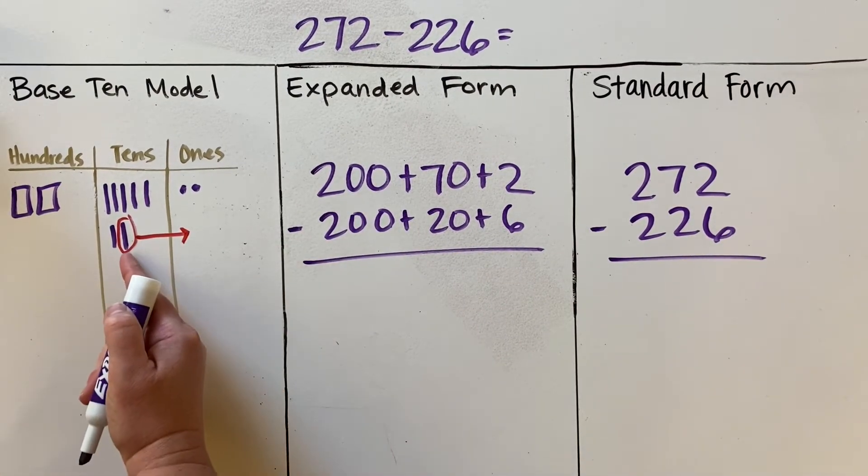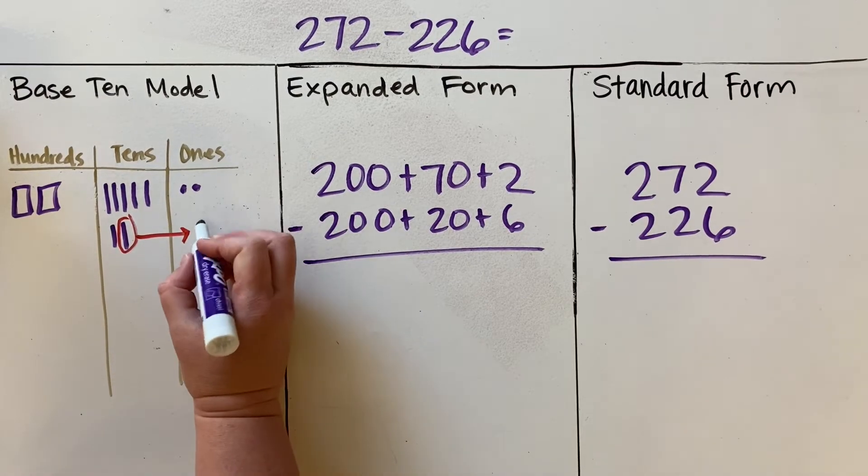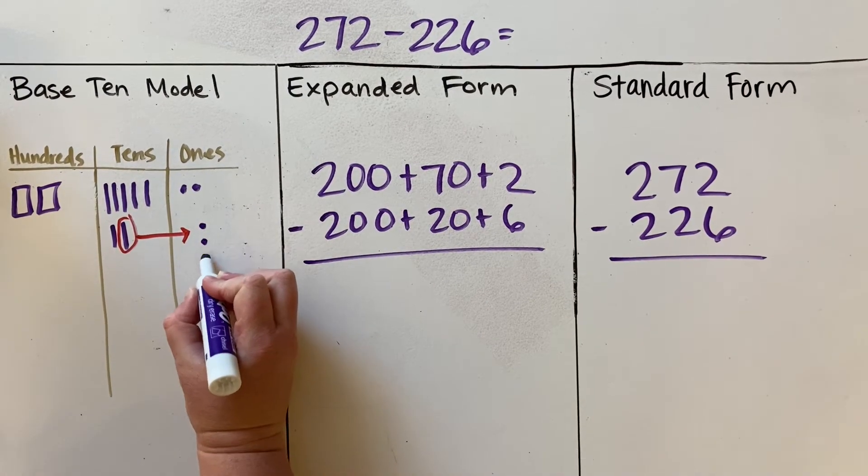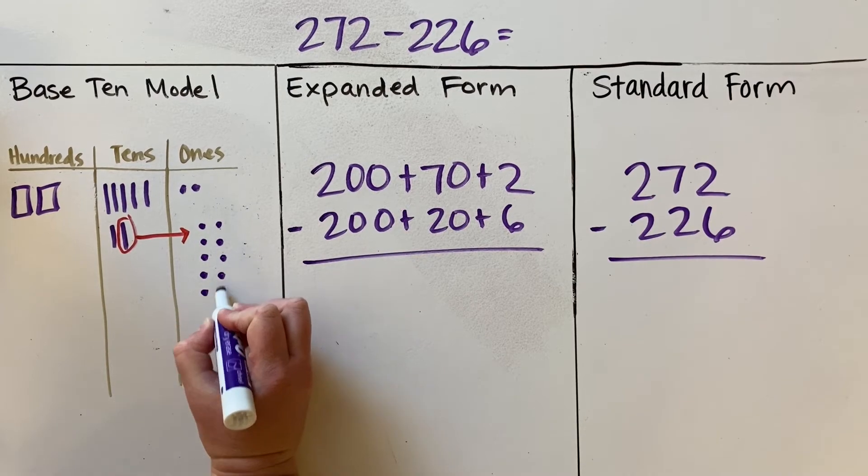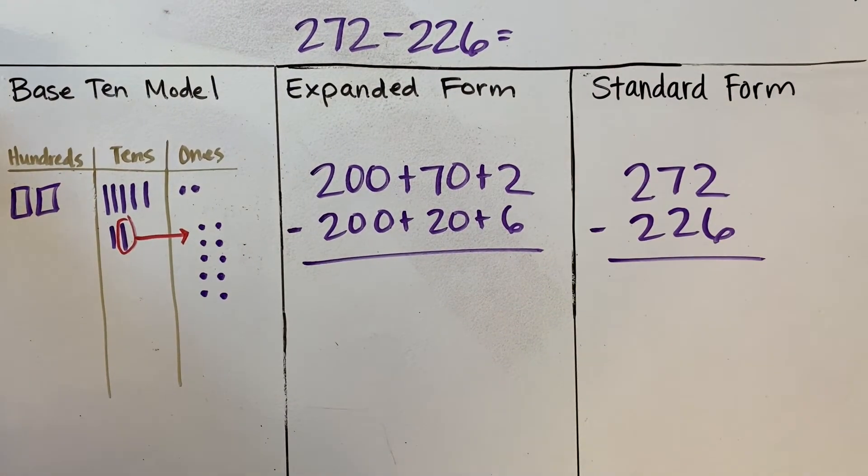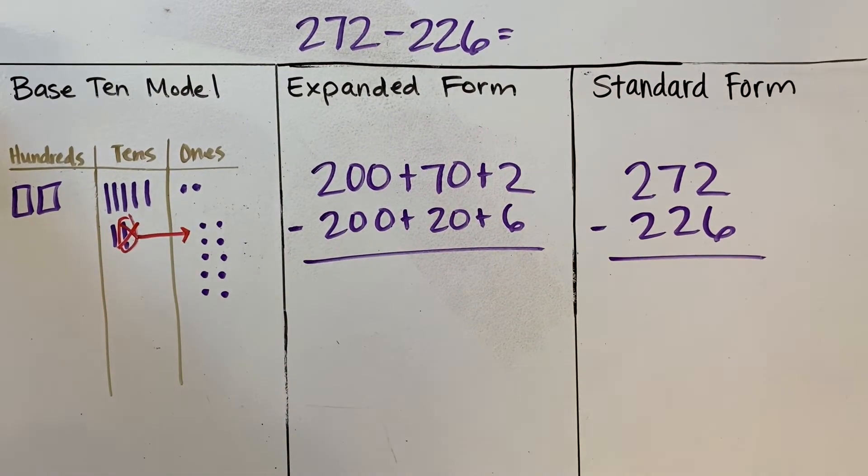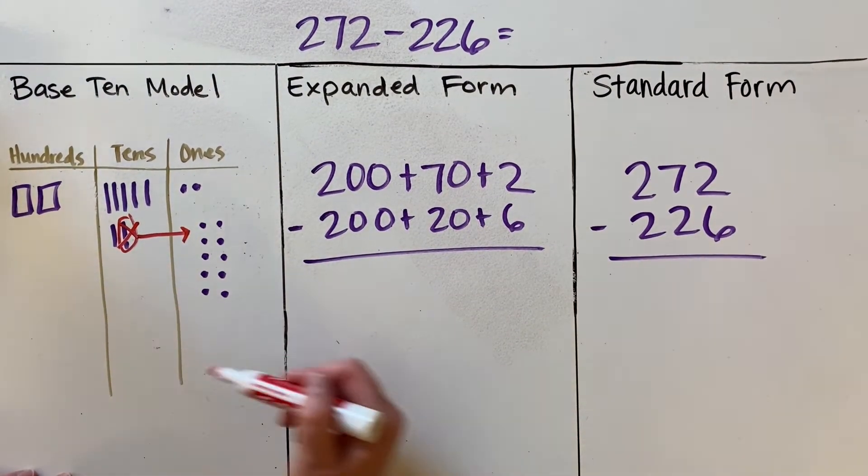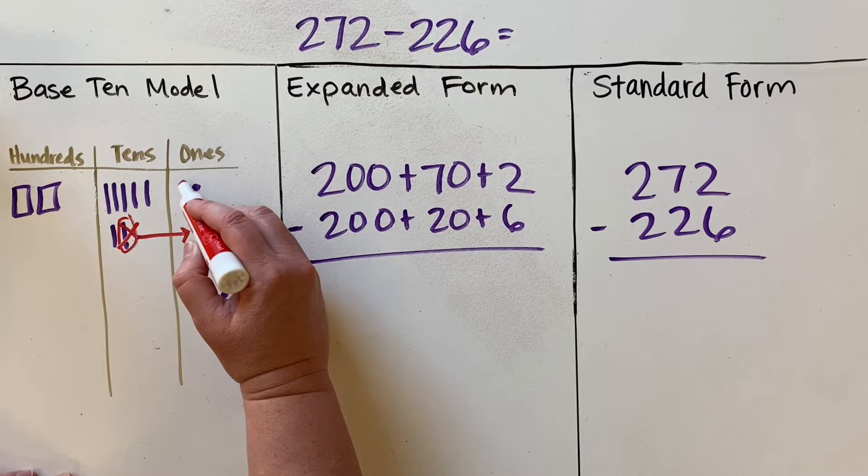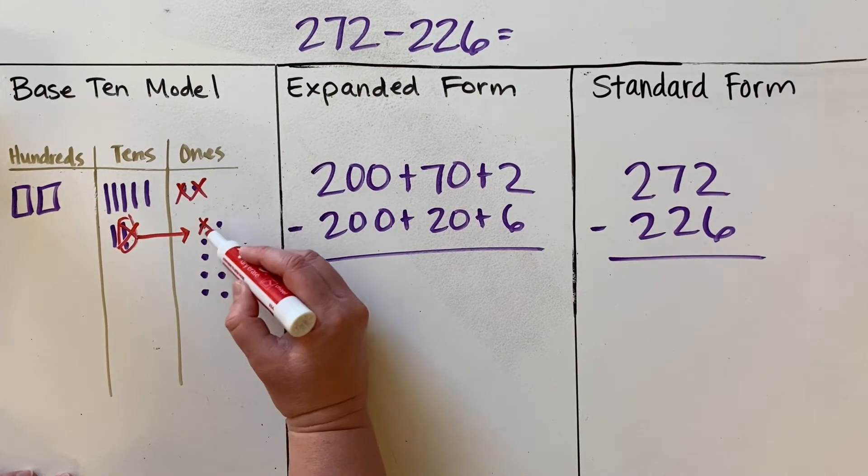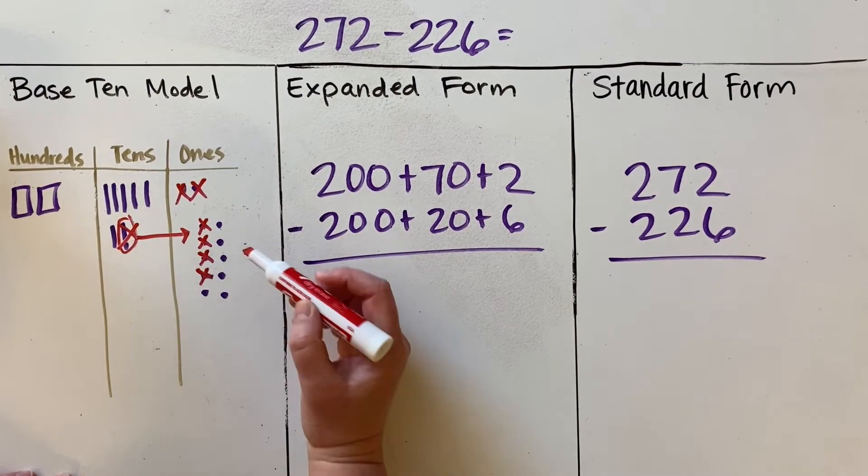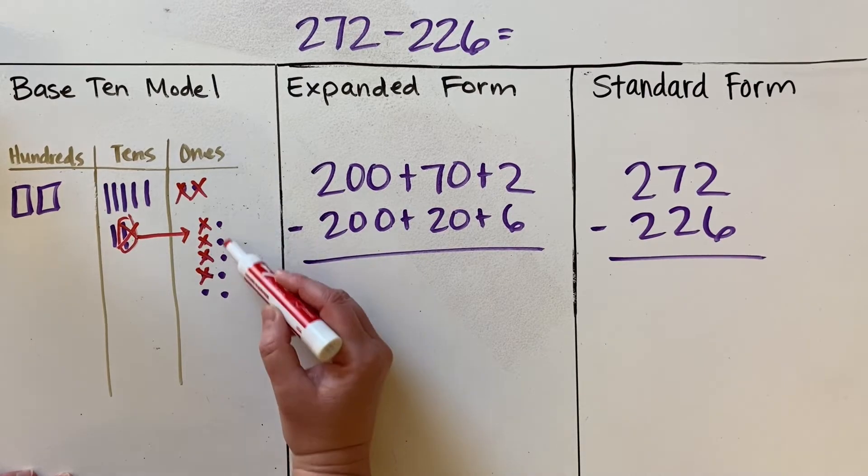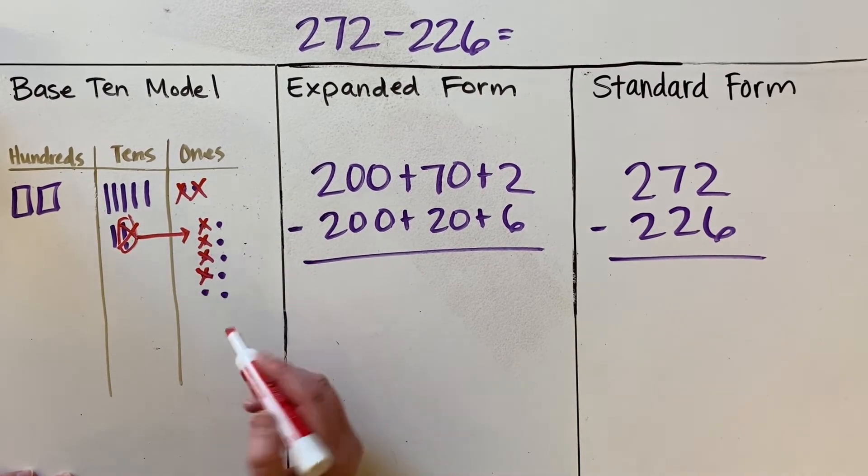Instead of that being in the value of one ten, I'm now going to make it be 10 ones. There they are. So it's no longer a ten right there, and now we can go ahead. We have enough, and we can subtract six ones: one, two, three, four, five, six, leaving me with one, two, three, four, five, six.